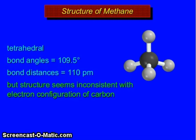Structure of methane: tetrahedral, bond angle 109.5 degrees, bond distance is 110 pm, but the structure seems inconsistent with the electron configurations of carbon.